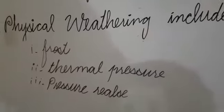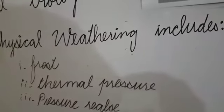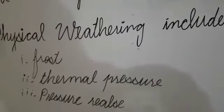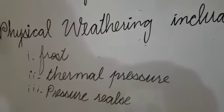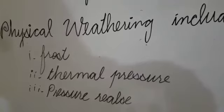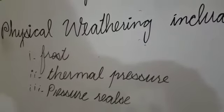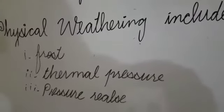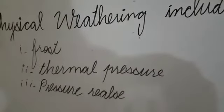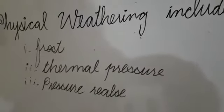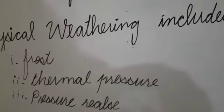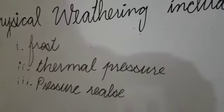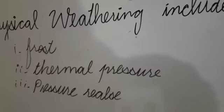The next subtype is thermal pressure. Thermal pressure happens due to the contrast of high temperature inside the earth and low temperature on the upper surface of the earth. This contrast of high and low temperature causes the breakdown of rocks, and is known as thermal pressure. Next is pressure release — when the earth releases pressure from inside, it causes rocks to break down into smaller parts.